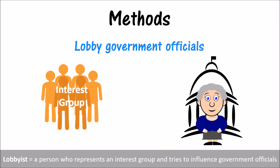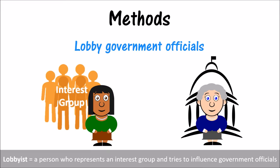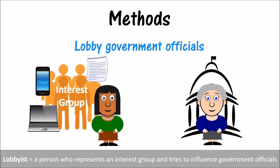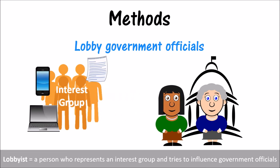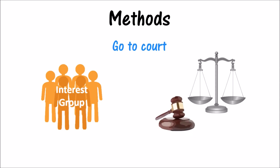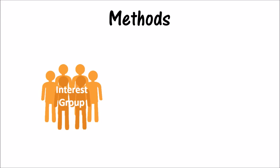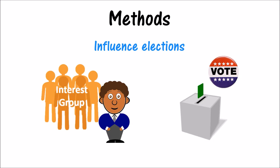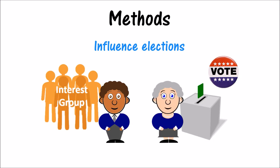Interest groups are likely to encourage members to also make contact by making a phone call, sending an email, writing a letter, or visiting an office. Another method is to go to court by either filing a lawsuit or providing defense services. Additionally, some interest groups try to influence elections to help favorable candidates get elected and supportive politicians get re-elected, and they advocate for their cause during elections so candidates pay more attention to their special interest.